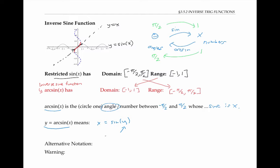we specify also that y is between negative pi over two and pi over two. That was the whole point of doing this domain restriction, in order to get a well-defined inverse value.